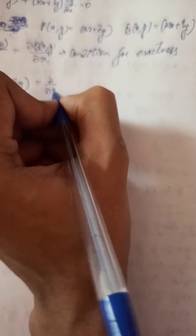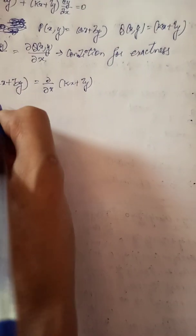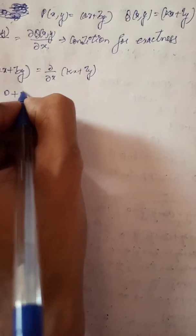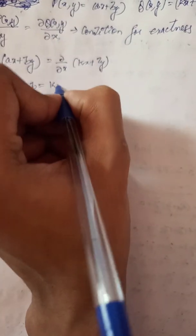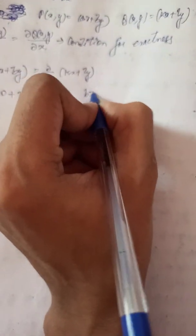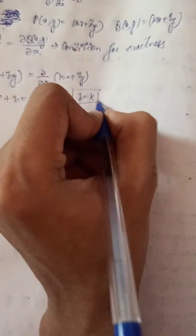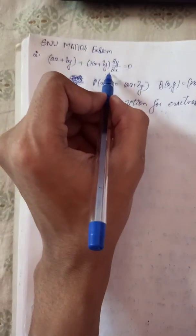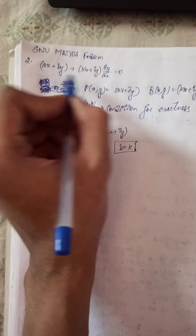Applying this condition: partial derivative with respect to y of (ax plus by) equals partial derivative with respect to x of (kx plus ly), which implies 0 plus b equals k plus 0. So for the condition b equals k, the given ODE becomes an exact ODE.